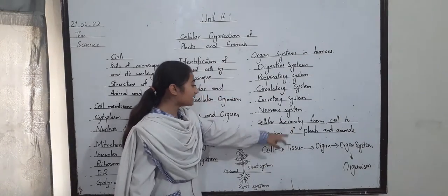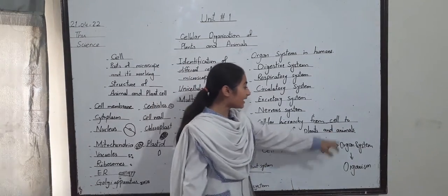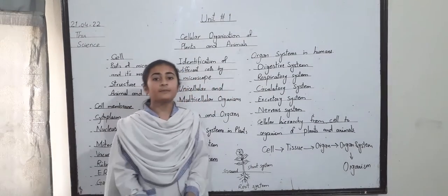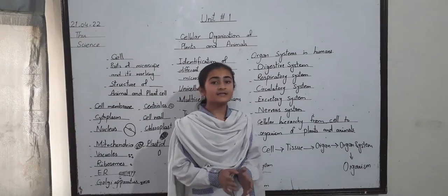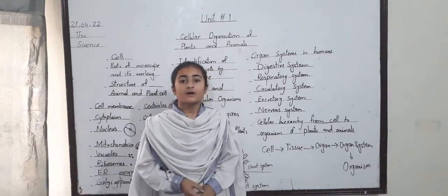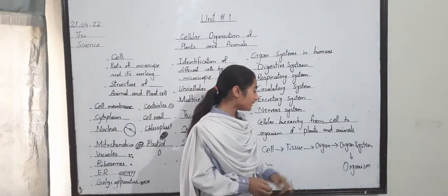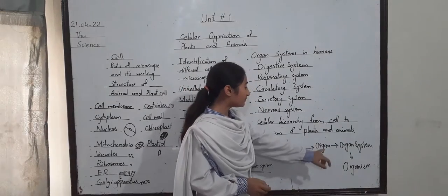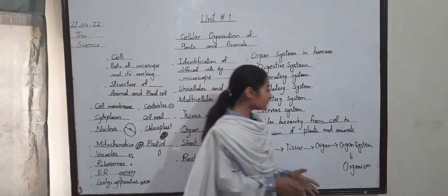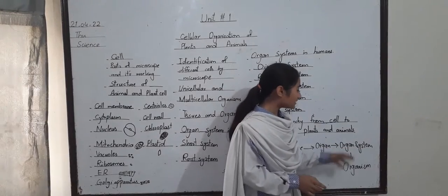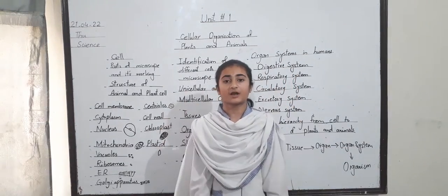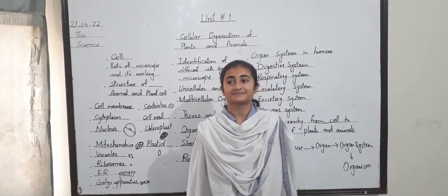Cellular hierarchy from cell to organism in plants and animals: when similar cells come together they form a tissue, when tissues come together a group of tissues work together to make an organ, and when organs come together they form an organ system, and in this way a complete organism is formed. Thanks.